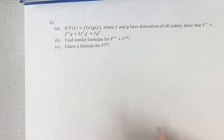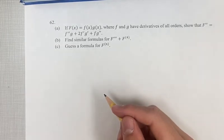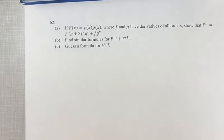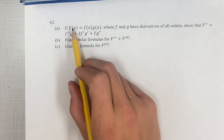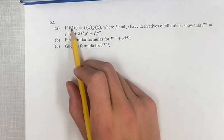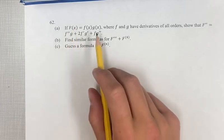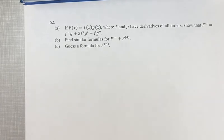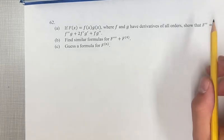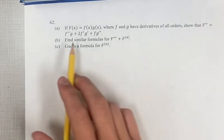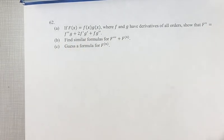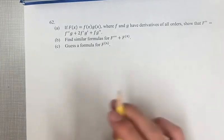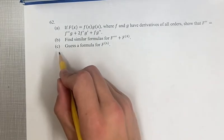Hello and welcome back to our video. In this problem, we're asked that given capital F of x equal to f of x times g of x, show that the second derivative is equal to a given equation. So first, let's find the first derivative.